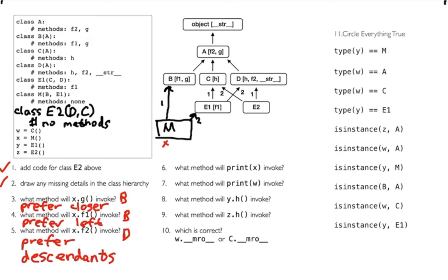Moving on, let's mix in special methods with inheritance. If I call print(x), what is that going to invoke? X is of type M. Remember when I print things I'm calling the __str__ method. I have a __str__ up here and one down here. Well, I prefer descendants — this one is a descendant of that one, and that was my strongest rule. So it's going to end up using the D version.